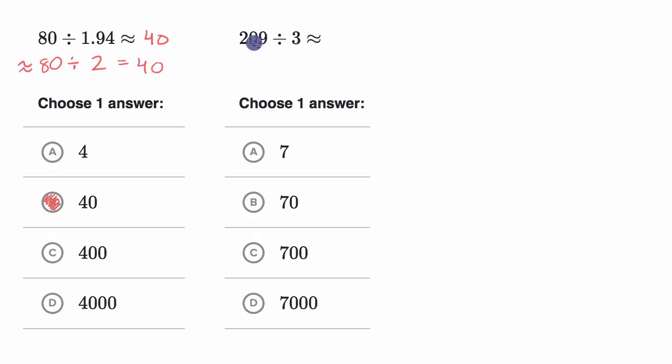So once again, here we don't have any clear decimals. If we were to divide it out, we would get a decimal answer for our quotient. But what we could do is, is either one of these, is for example, 209, is it close to a multiple of three that we might recognize?